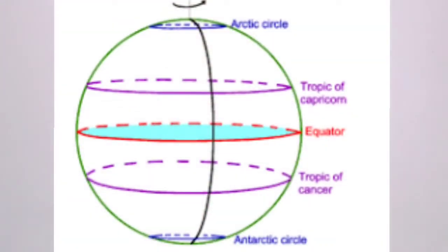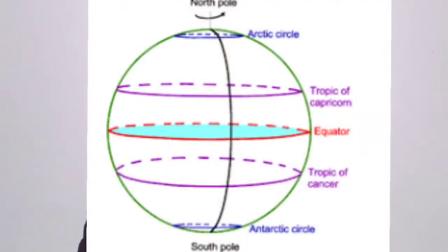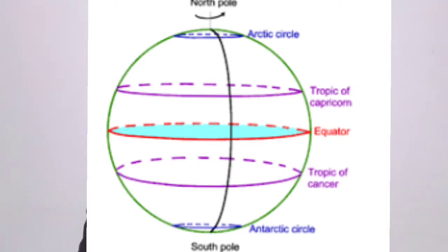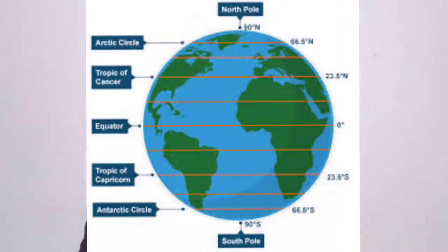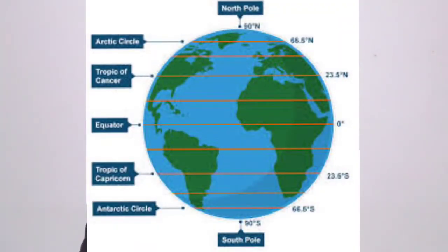On these two important parallels, sunrays fall perpendicular. 66 degree 30 minutes north is called the Arctic Circle and 66 degree 30 minutes south is called the Antarctic Circle. 90 degree north is called the North Pole and 90 degree south is called the South Pole.